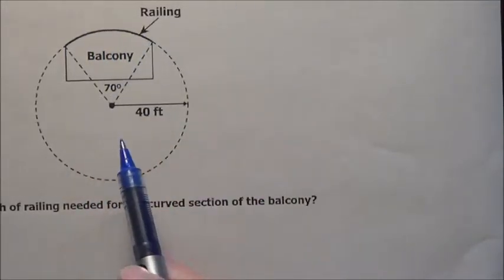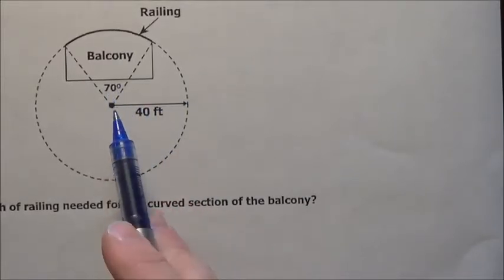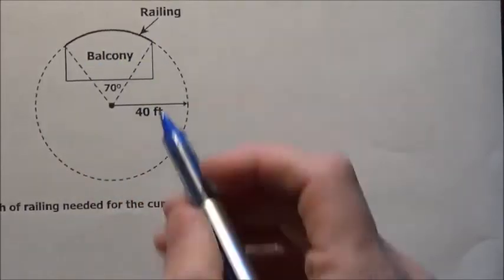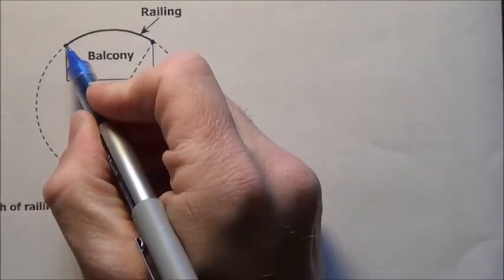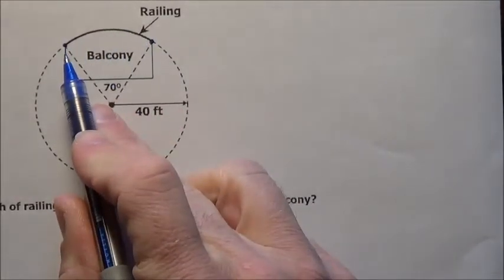She drew a circle with a radius of 40 feet, so here to here is 40, and a central angle of 70 degrees to determine the length of the railing needed for the balcony. So they want to know what is the length from here to here. If they're asking for an arc length in a circle,